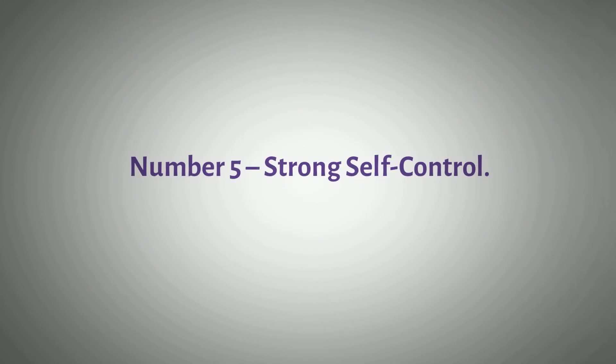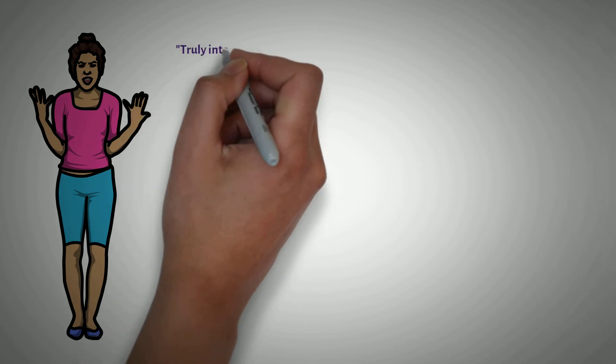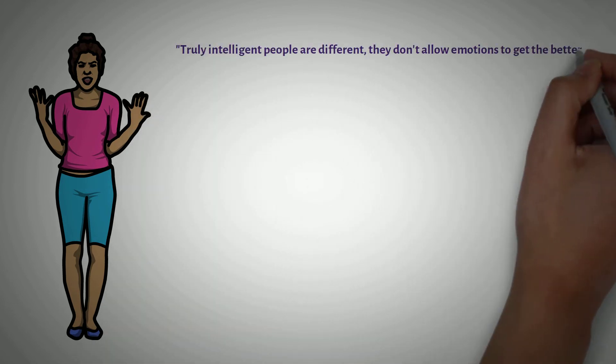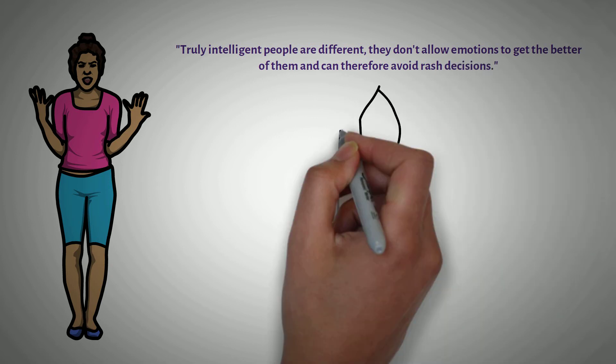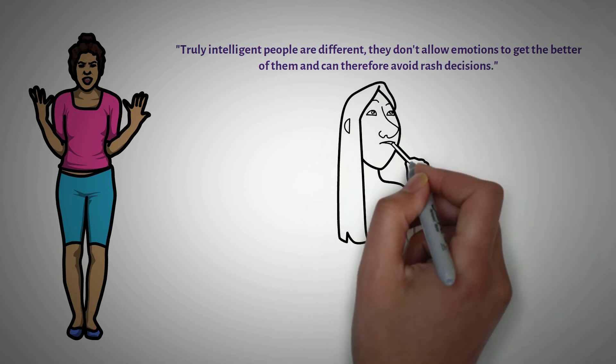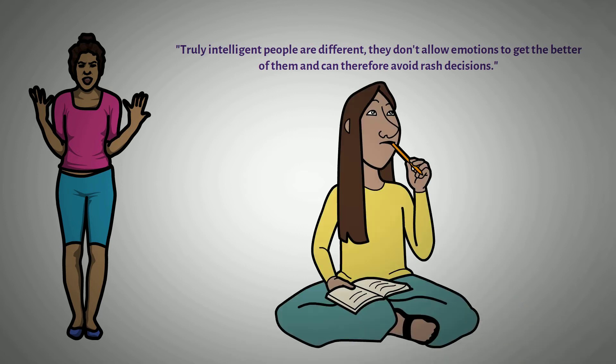Number 5: Strong Self-Control. When hurt, rejected, or dismissed, many people might resort to yelling. Truly intelligent people are different. They don't allow emotions to get the better of them and can therefore avoid rash decisions. They're more the type who think rationally and weigh the pros and cons of a situation. You won't find them throwing things and whatnot.